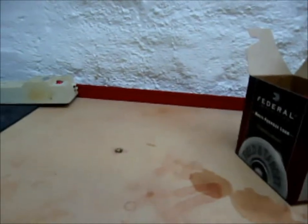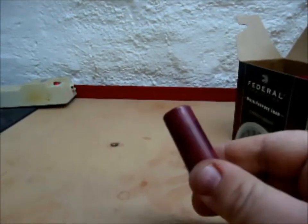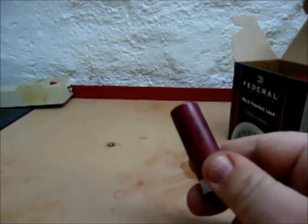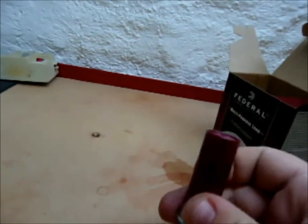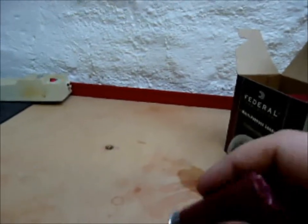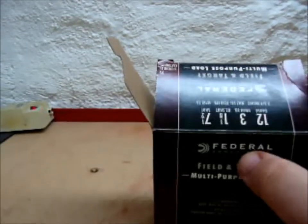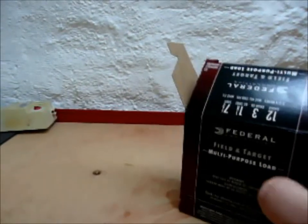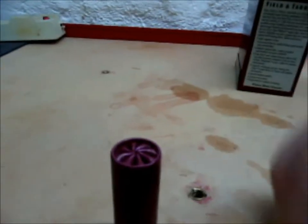There we go. This is your standard 12-gauge, 7 1/2 size birdshot, 2 3/4 inch, like a 1 1/8 ounce of lead. It's Federal, the cheap shit you get at Walmart, 100 rounds, almost like 24 to 34 dollars after tax, so barely over 24 cents a round. That's your standard.